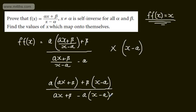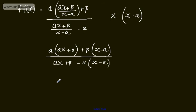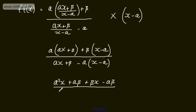If we expand the brackets and tidy up, we're going to have in the numerator alpha squared x plus alpha beta, then plus beta x minus beta alpha, which we can write as alpha beta. In the denominator, expanding the bracket, we'll have alpha x plus beta minus alpha x plus alpha squared.